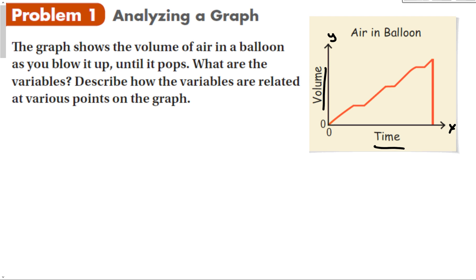Describing how the variables relate at various points: as time moves forward, the volume goes up, then stays the same, then up, same, up, same, up — and then suddenly drops back down to zero. Think about actually blowing up a balloon: you blow air in, then stop to take a breath (that's the flat point — time moves forward but volume doesn't increase), then blow again, take a breath, blow again, and finally it pops at the peak. The volume shoots to zero and we stop the graph.